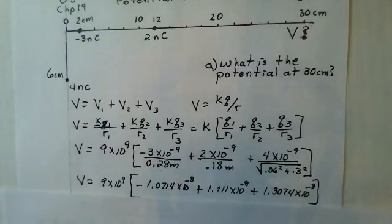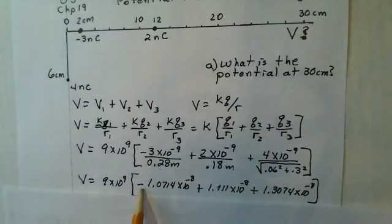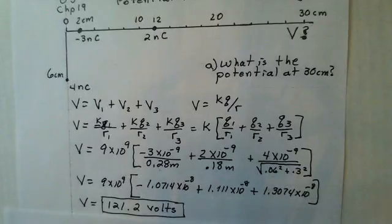Again, you might want to calculate them for yourself. Pause and compare to mine. Minus 1.0714 times ten to the minus eight, 1.111 times ten to the minus eight, 1.3074 times ten to the minus eight. Combine the numbers inside the parentheses, paying attention to the minus sign here. This negative charge has a negative potential. And multiply through by the nine times ten to the ninth. I got 121.2 volts. Hope that's right. Let me know if you think it's different.